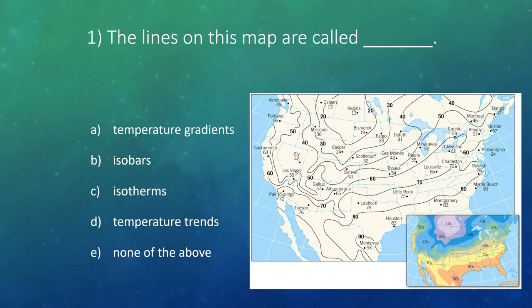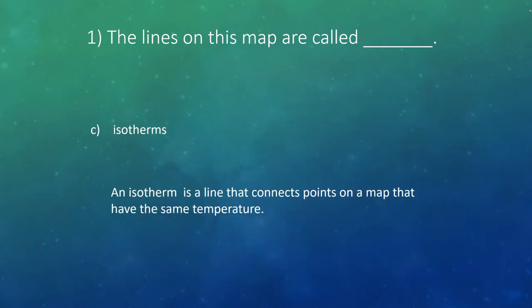Let us conclude this lecture with a few questions. Question one: the lines on this map are called what? They do depict a temperature gradient, but the lines themselves are called isotherms. Isobars was an option included to throw you off — we will learn about isobars soon, but that term refers to equal pressure, not equal temperature.